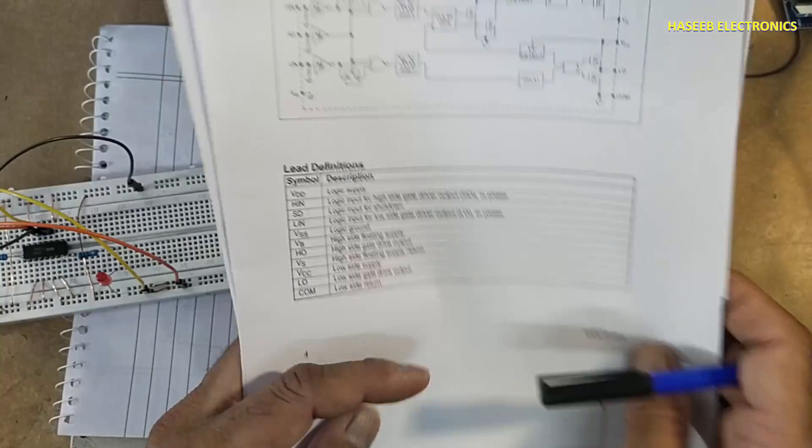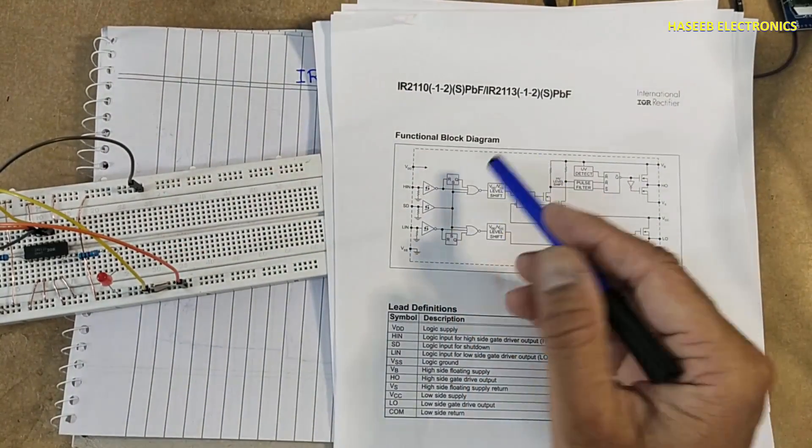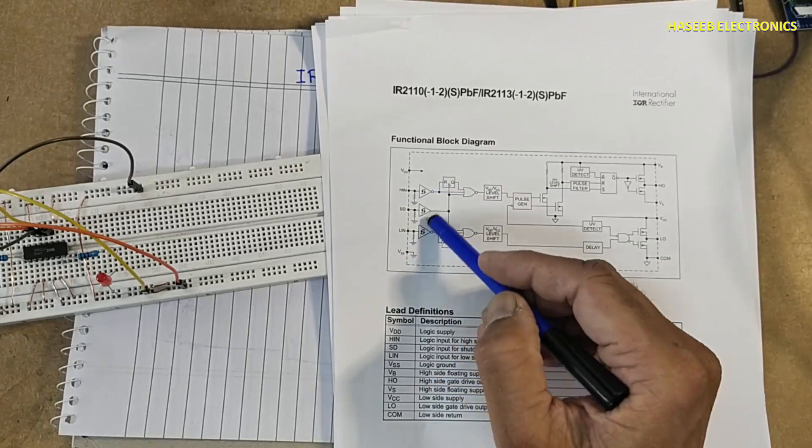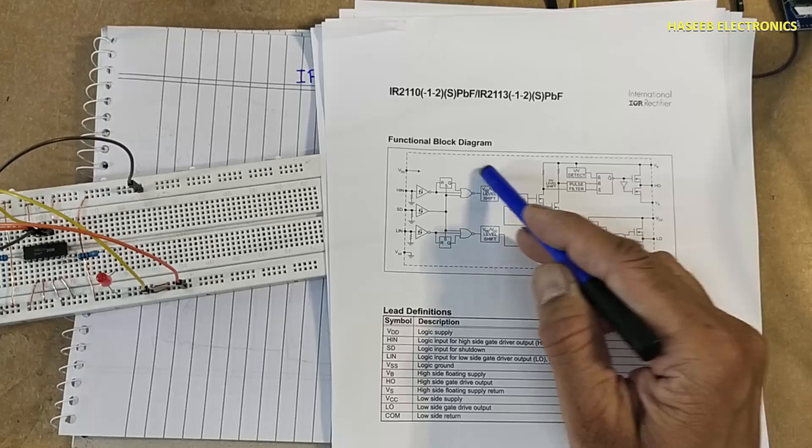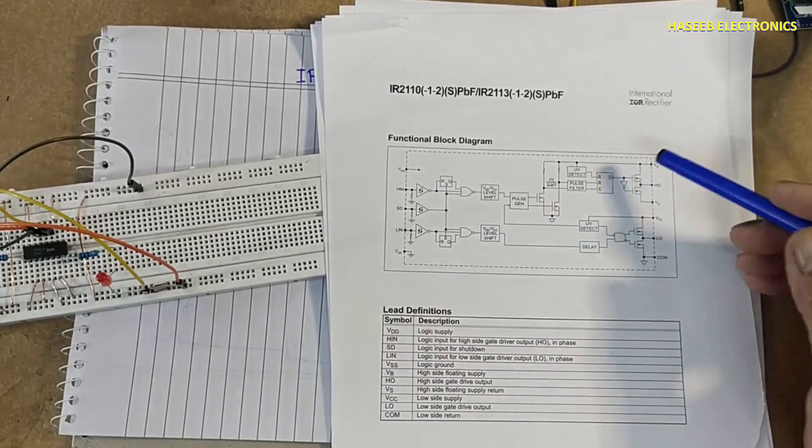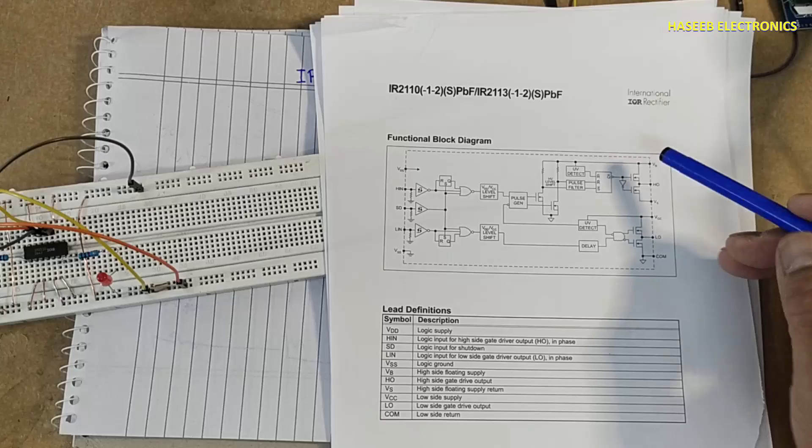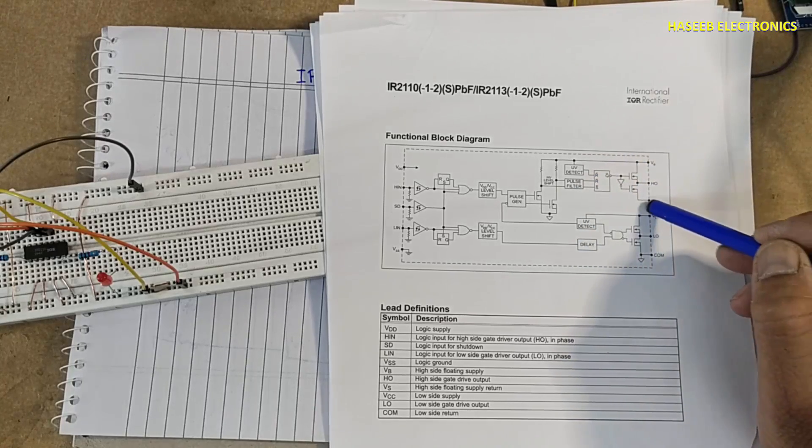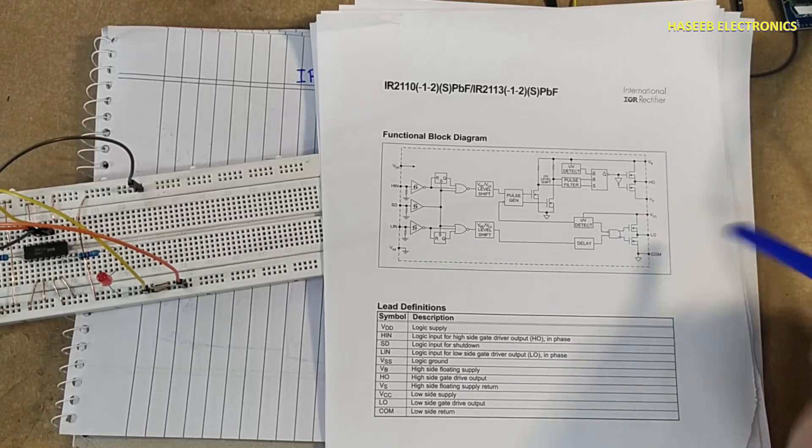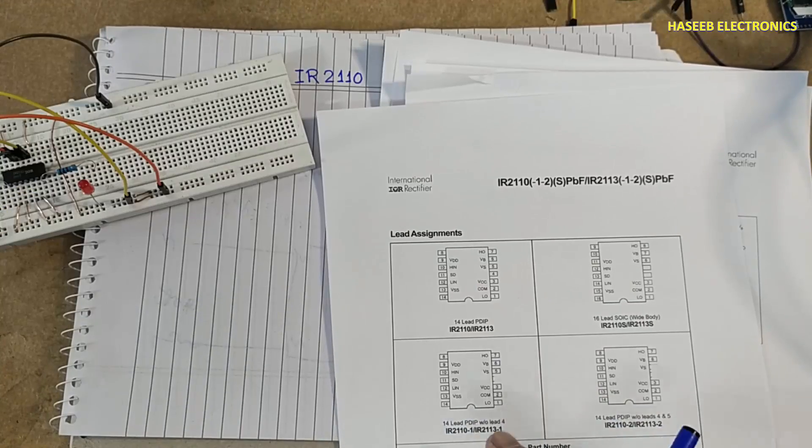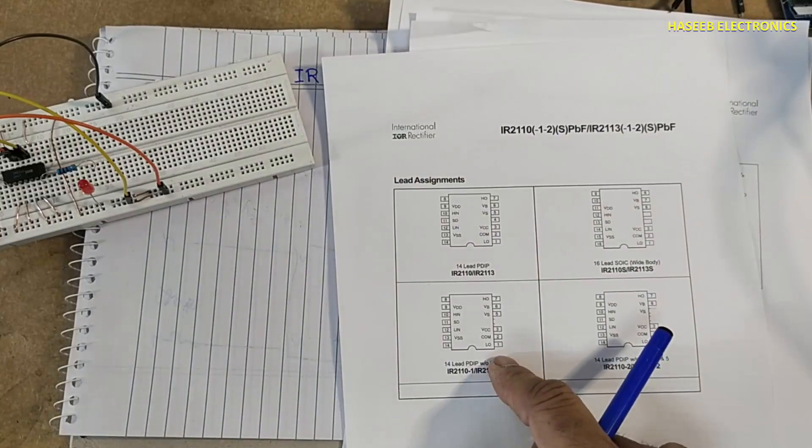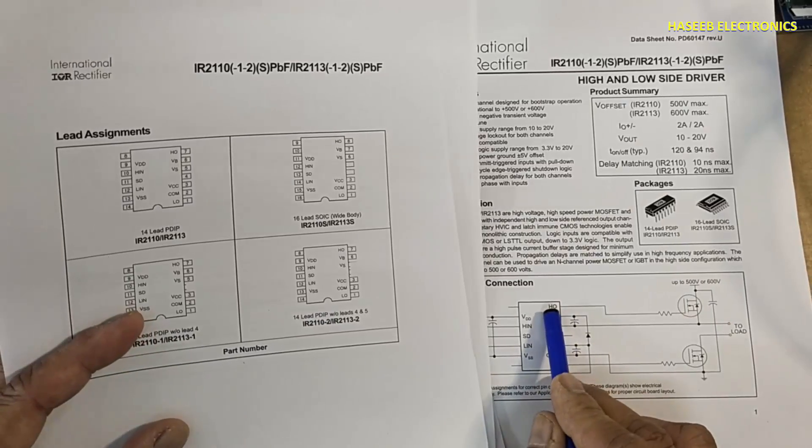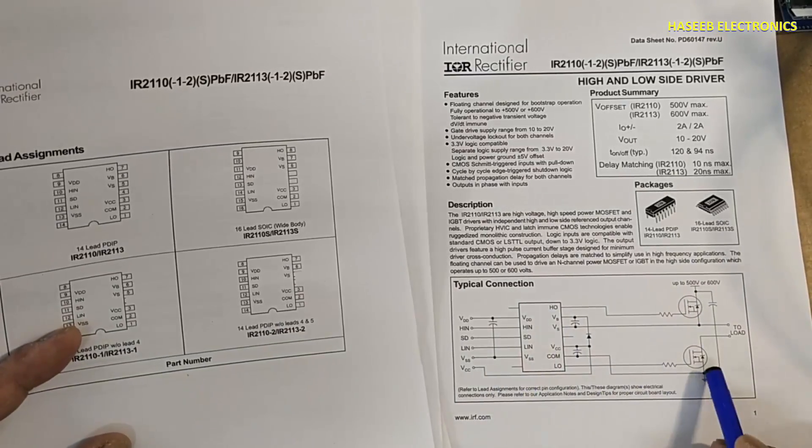If you see its logic diagram, this IC contains different portions. Here is the Schmitt trigger input section, then logic circuit, then there is a level shifter, and here is the high side MOSFET driver and this is the MOSFET driver section for the low side. Pin 1 is the low side output section, pin 7 is the high side output section. High side will drive high side MOSFET, low side will drive low side MOSFET.